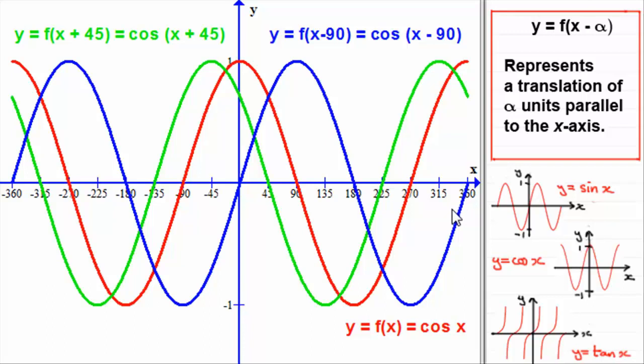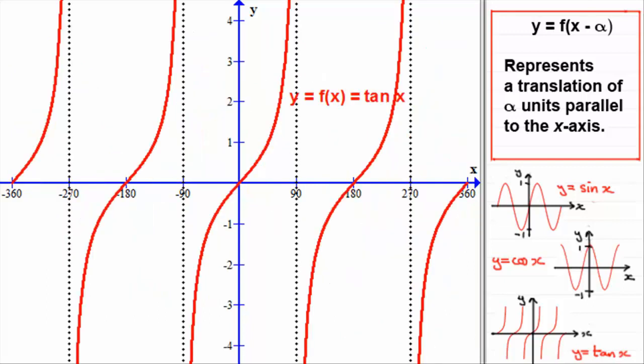We've got one more graph to look at, and that is y equals tan x. Here's the graph of y equals f of x, or tan x, with the asymptotes that you should be familiar with. What I'd like you to do is sketch y equals f of x minus 60, where we replace the x in tan x with x minus 60, giving us tan of x minus 60 degrees. Have a go at sketching that. Pause the video, and when you're ready, come back.